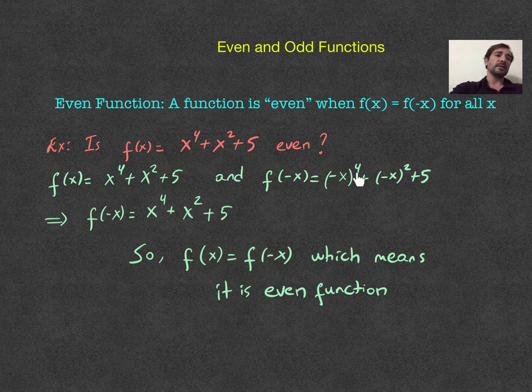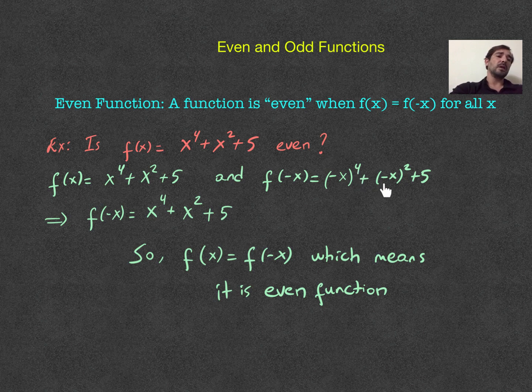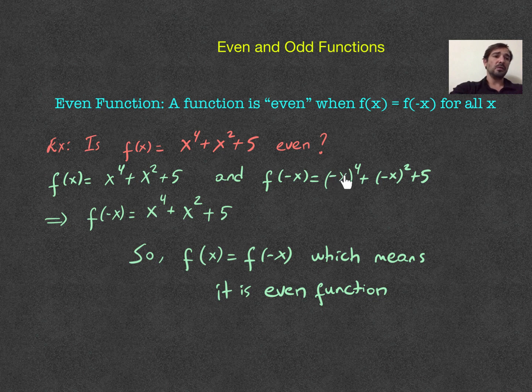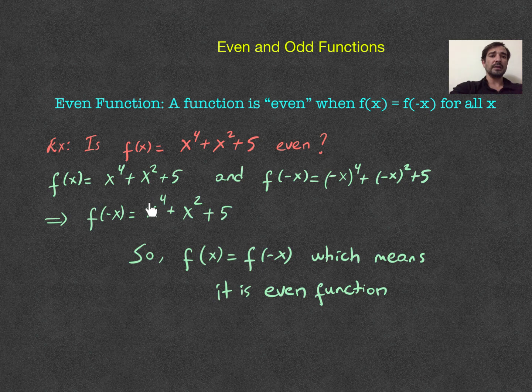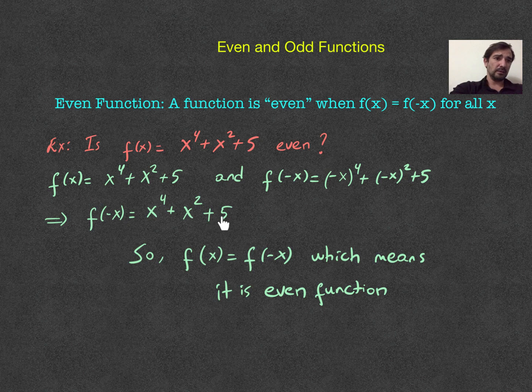So, negative x power of 4 plus negative x power of 2 plus 5. Now, if I take the even power of negative number, it always gives me a positive. So, I'm going to get x power of 4 plus, same here, I have even power. So, that will be positive x square plus 5.